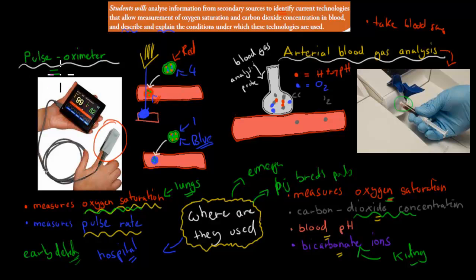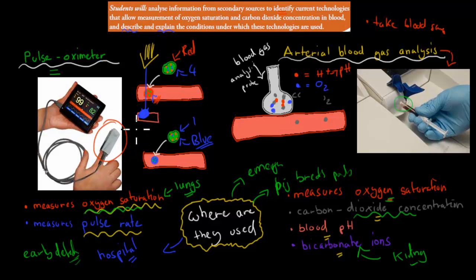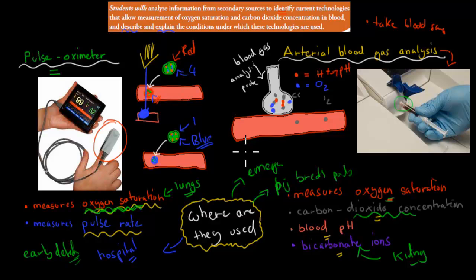So hopefully that was useful. You have to be able to remember these two different technologies and be able to describe and explain when they're used. 'Describe' would mean, okay, they're used in early detection. 'Explain' would be: they're used in early detection because it's easy — you don't have to take blood, and it gives you detail on how you're feeling via oxygen saturation levels and pulse rate. But if it's more serious, you go for the arterial blood gas analysis because you get more detail. Hopefully that was useful.